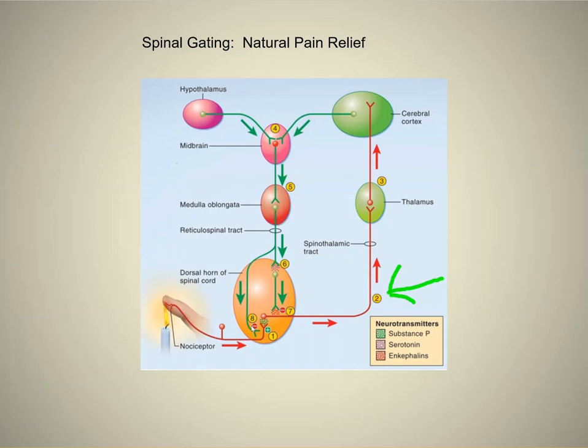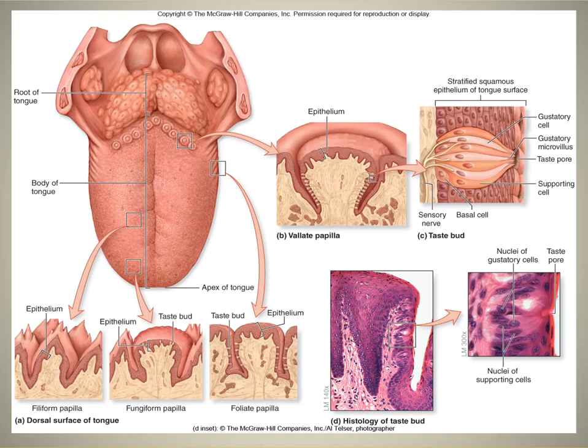You often notice that when you first injure yourself, it's a really sharp pain and then you withdraw your hand. Then that sharp pain subsides after a little bit and it just becomes more like a dull ache. That's due to this spinal gating pathway — natural pain relief. Okay, slide 15 is just showing your tongue and where the...